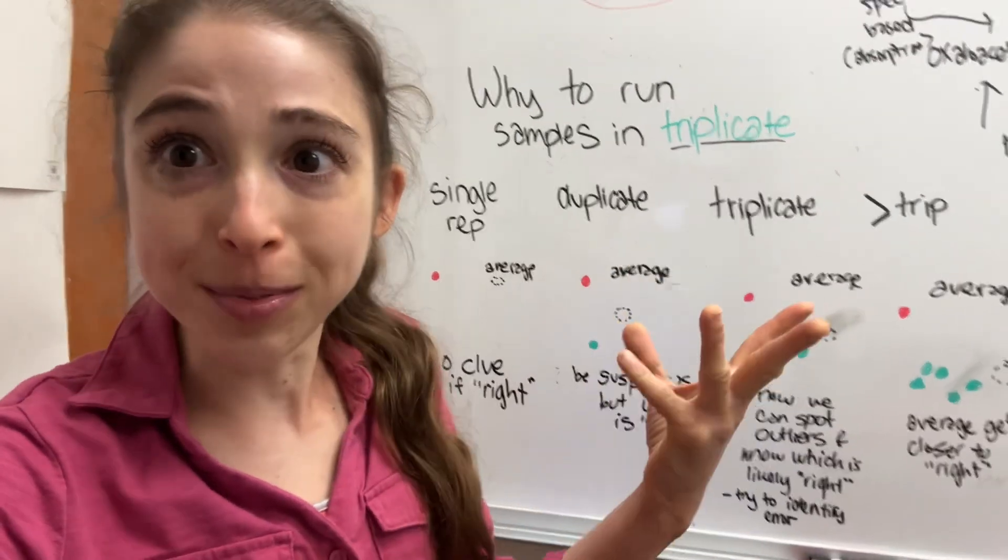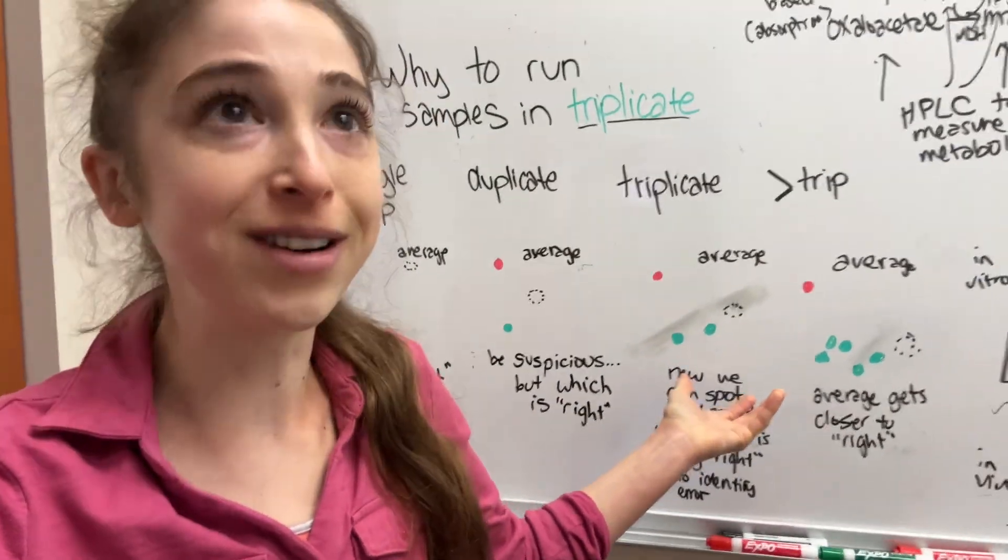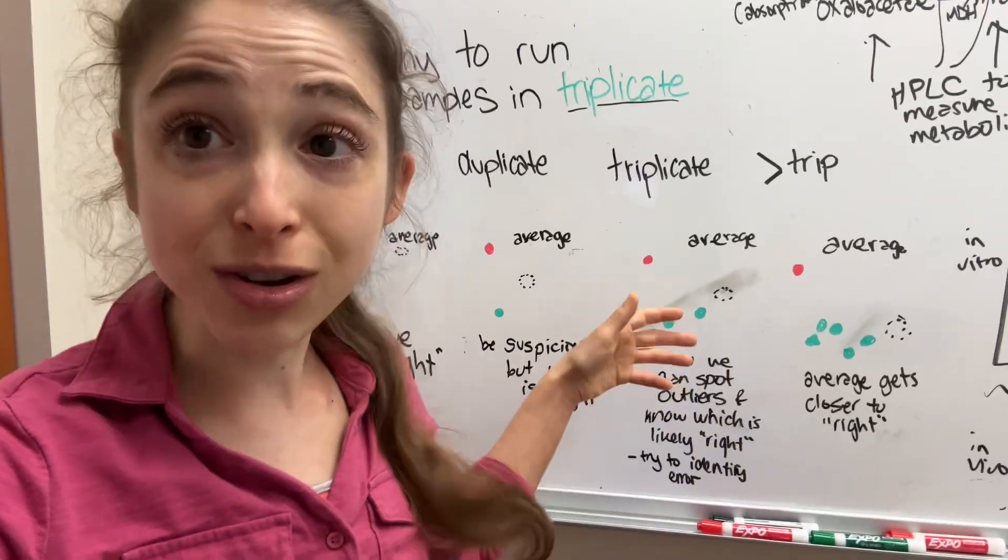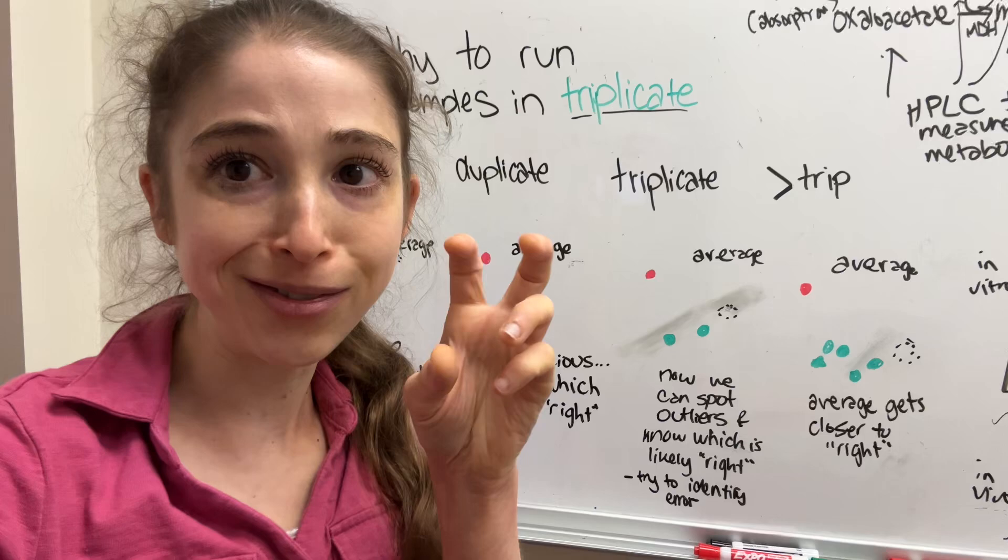Well, you should have run triplicate, at least triplicate. So if you had run triplicate, or now if you're redoing your experiment because you didn't run triplicate, now what you can do is your values should start to cluster near the one that's actually right.